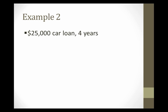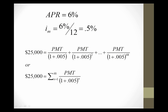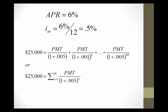Now let's look at a second example. This time I'll give you the interest rate and we'll figure out what the payments would have to be. We're still doing a car loan — $25,000 over four years. The APR is 6%, which means the periodic monthly interest rate is 6% divided by 12, which is 0.5%. We take that 0.5% and calculate what equal payment, made over 48 months, discounts back to $25,000. A spreadsheet makes it a lot easier.